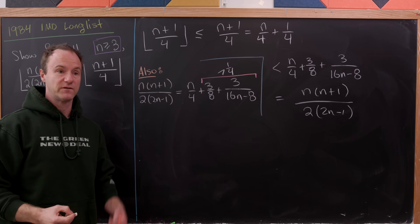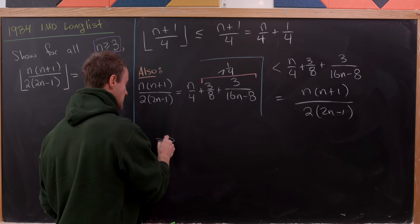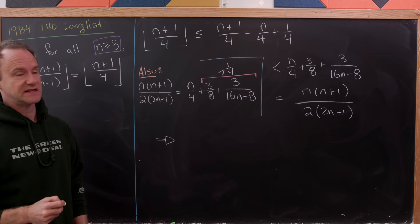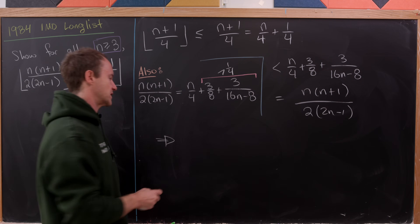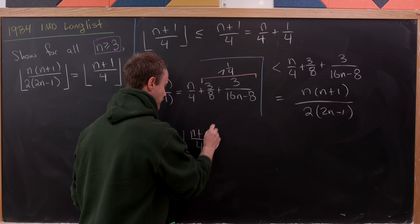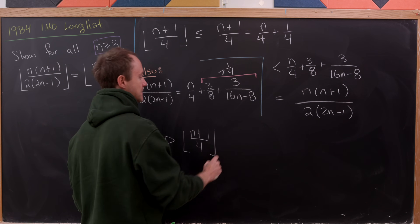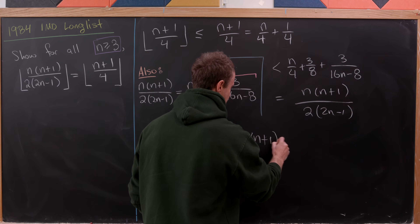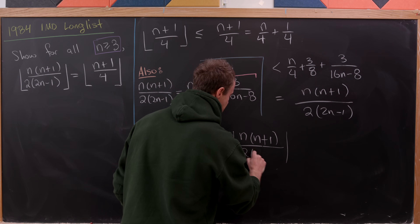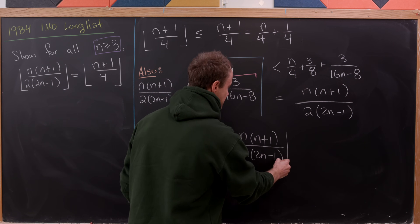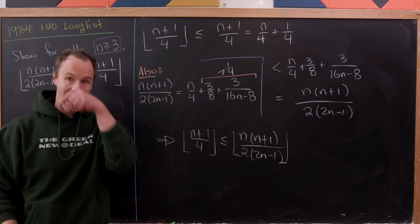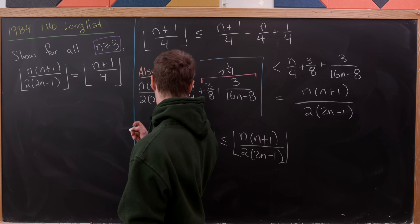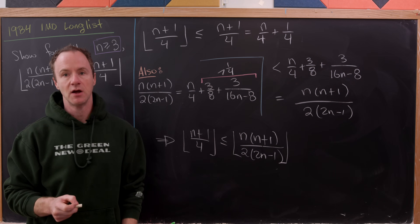We can use the fact that the floor is a weakly increasing function and take the floor of both sides. Taking the floor of the floor doesn't do anything, so that gives us the floor of n plus 1 over 4 on the left-hand side, and the floor of n times n plus 1 over 2 times 2n minus 1 on the right-hand side. So we've kind of done half the problem — we've proven that the right-hand side is less than or equal to the left-hand side.